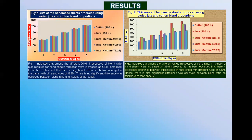Figure 2 indicates the thickness of hand sheets produced using varied jute and cotton blend proportions. As the thickness of the hand sheet with different types of GSM increased, the thickness of the paper was increased because of the coarseness of the fiber material, which is the main reason for variation in the thickness.